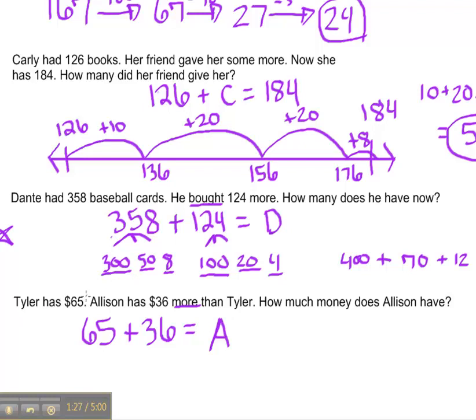So Tyler has 65 dollars. That's my first piece. But we're not really actually going to be talking about Tyler. We're really taking Allison and what she has, which is 36 more than Tyler,